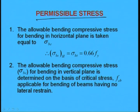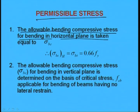Another aspect is the permissible stress criteria. The allowable bending compressive stress for bending in the horizontal plane is taken as σbc = 0.66 fy. So when a bending moment develops due to horizontal load, both σbc and σbt equal 0.66 fy — that is, the permissible bending stress in both compression and tension is 0.66 fy for horizontal loading.